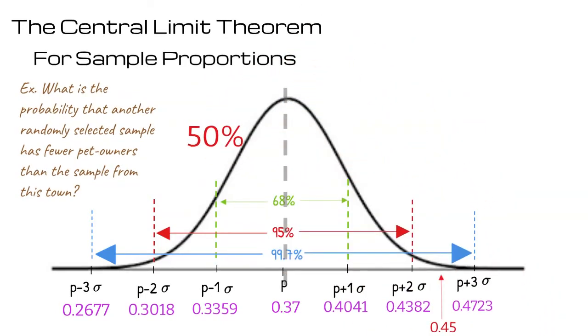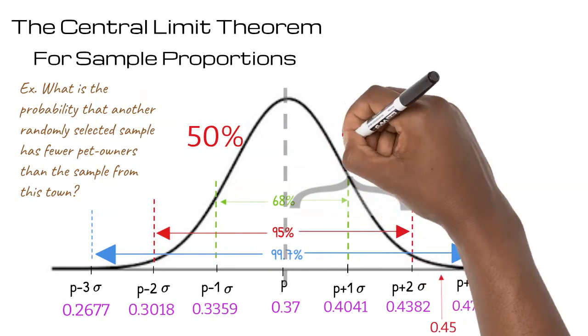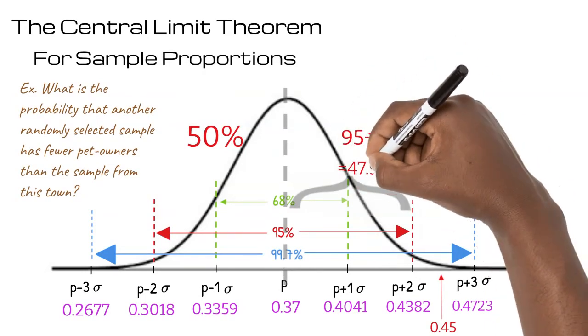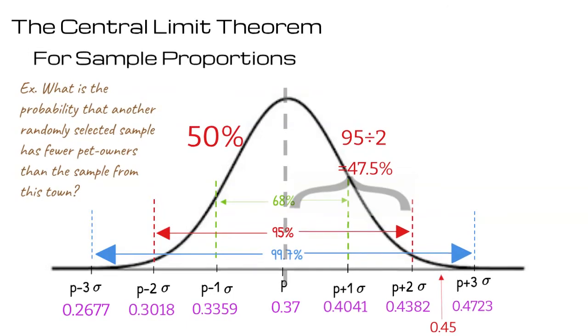From the line of symmetry to two standard deviations above the average proportion, we divide 95 by 2 and see that there is another 47.5% of proportions, and here's a bit more.